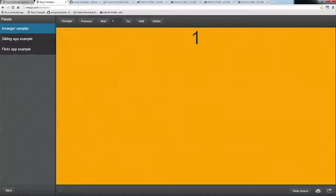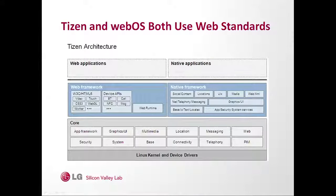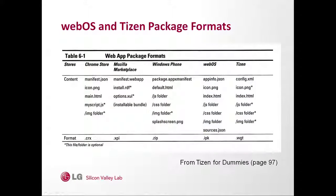We have the layout library, Onyx library, and then ties into WebOS. Because Enyo began life in WebOS, they share common use of web standards. Here's the OpenWebOS diagram: you have the Linux kernel, then above that HTML, JavaScript, CSS, and on top of that sits Enyo, and then on top of that sits your application. And if you look at the Tizen architecture, you have a similar thing with the Linux kernel, the web framework, and then your web app on top of that. Looking at a comparison chart from the Tizen for Dummies book, you can see how a WebOS app and a Tizen app are very similar structure-wise.